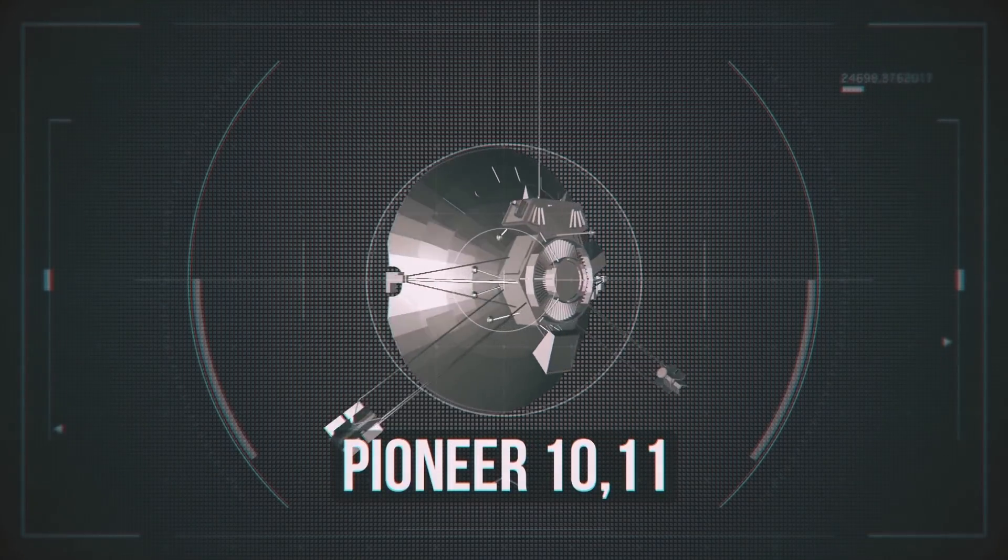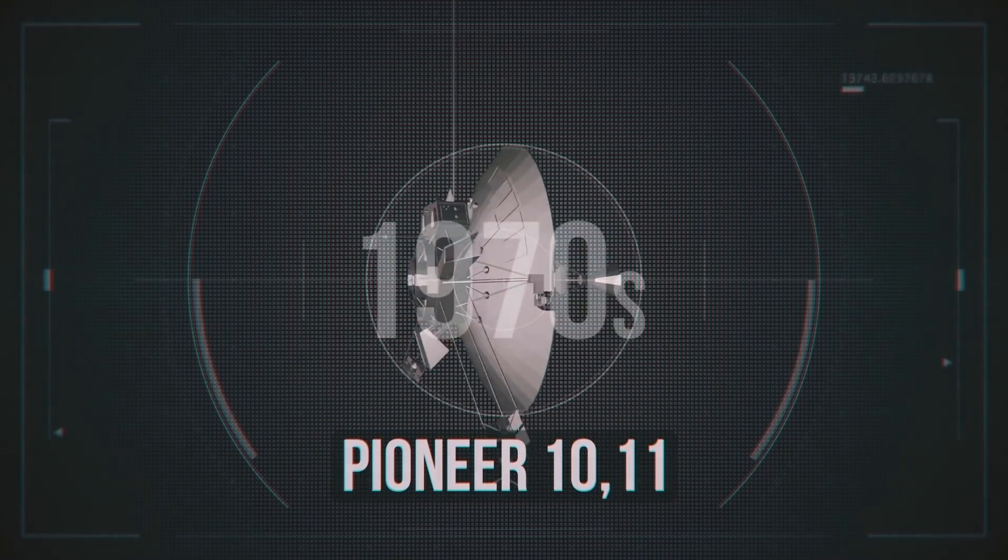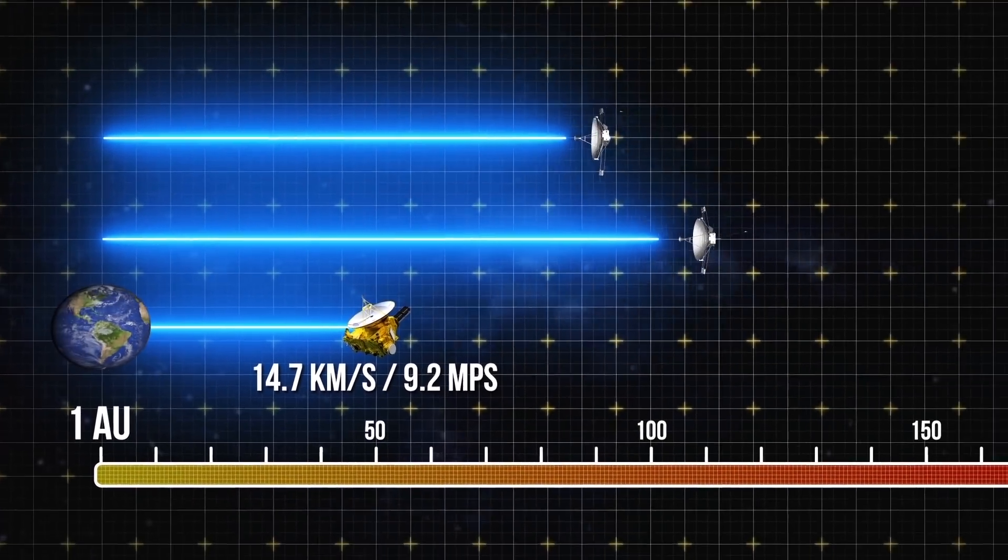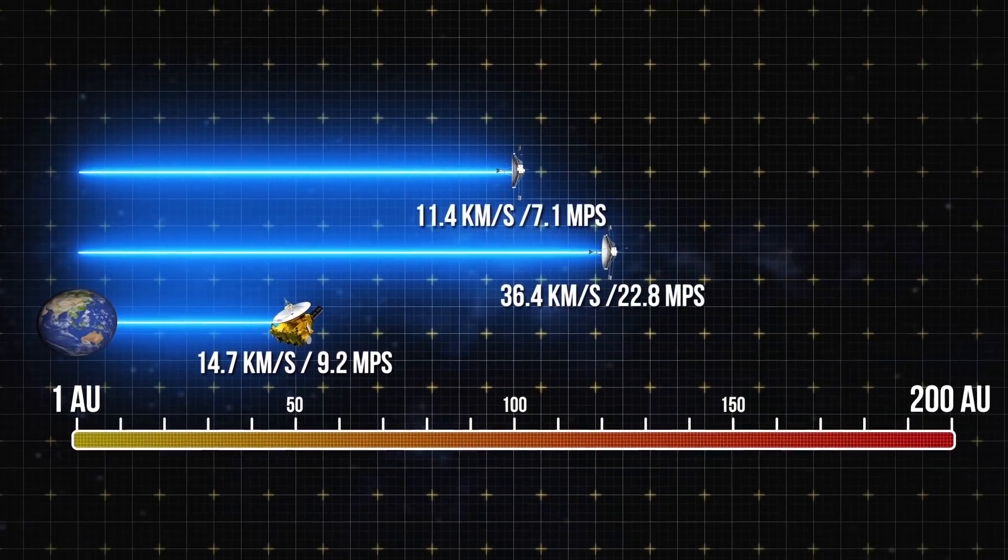At the same time, the twin probes Pioneer 10 and 11, which were launched by NASA in the early 70s, have achieved over 120 and 100 astronomical units.